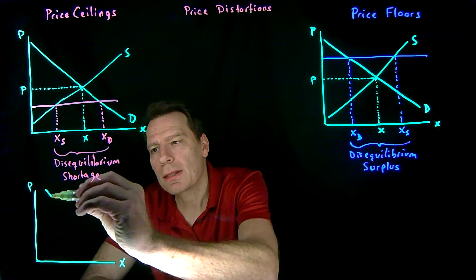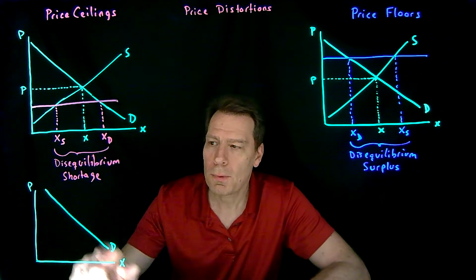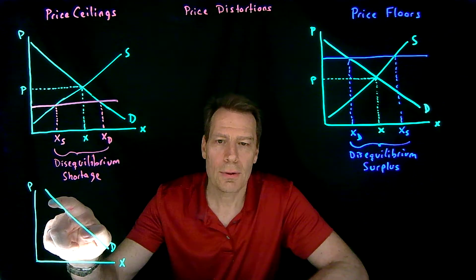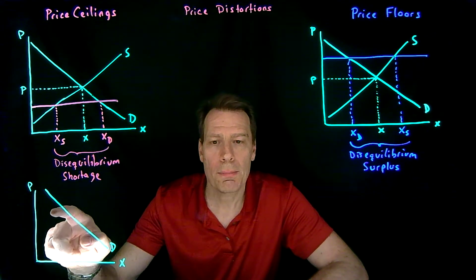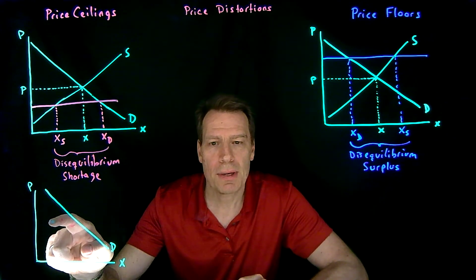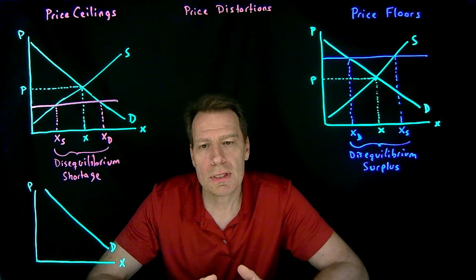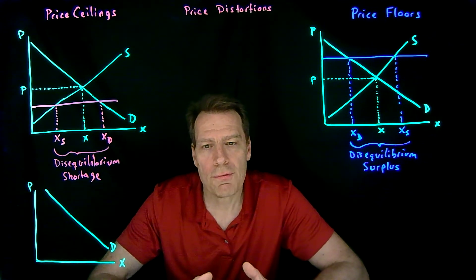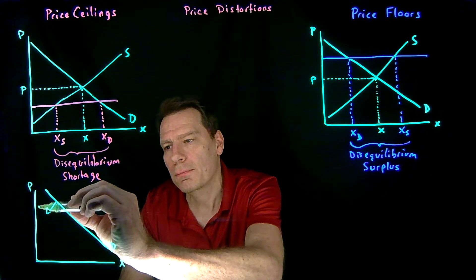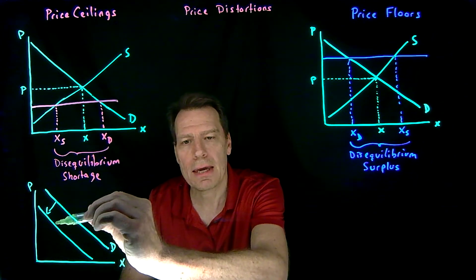If you think about what that does to the demand curve: if originally you were willing to pay a certain price, you're now going to be willing to pay a lower price because you know you still have to pay that effort cost as well. So when consumers have to exert effort to get to the goods, it's going to shift the demand curve down by the effort cost.